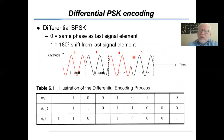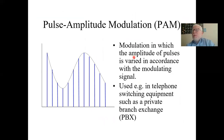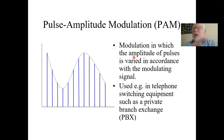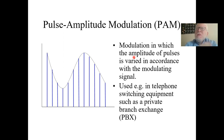Then we moved to pulse modulation, including pulse amplitude modulation, pulse position modulation, and pulse width or pulse duration modulation. We distinguished between pulse modulation and shift-keying modulation based on the nature of the channel. If we have a guided channel, we can use pulse modulation techniques. However, when we have an unguided channel, we have to use some sort of shift-keying techniques.